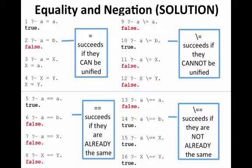One that might be surprising is in the top left: lowercase 'a' equals capital X. Capitals, again, are variables. It's saying, can these be unified? And instead of just saying true, it says, oh yeah, if these were unified, the variable X would have to be equal to a.